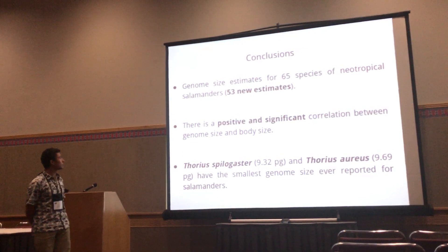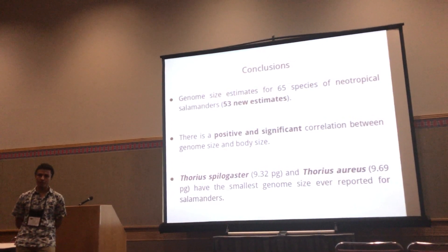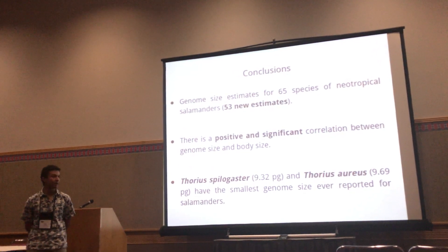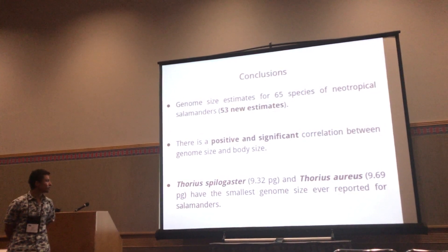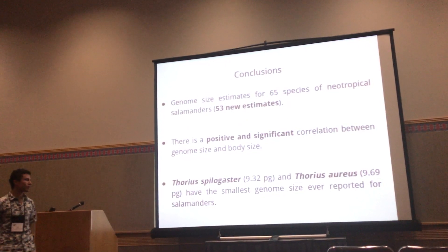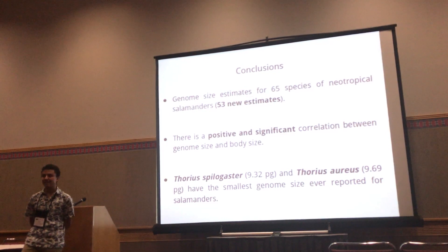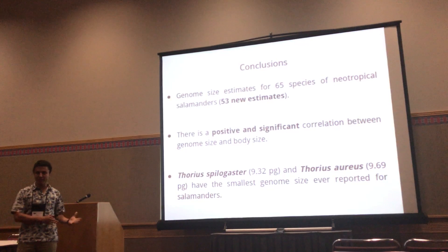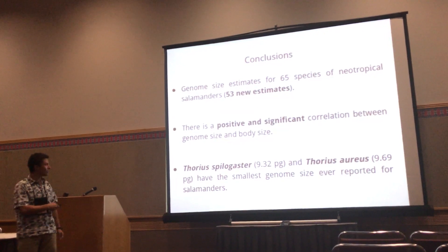We have these conclusions: we obtained genome size estimates for 65 species of neotropical salamanders, 53 of which are new estimates not previously reported in the Animal Genome Size Database. There is a positive and significant correlation between body size and genome size. We found that Thorius phylloscopus with 9.3 picograms and Thorius saurus with 9.6 picograms of DNA have the smallest genome sizes ever reported for salamanders — these are miniature salamanders with the smallest salamander genomes on record.